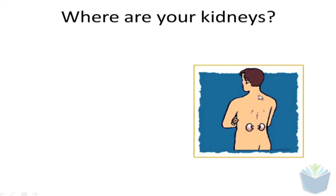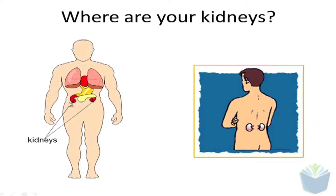If you're wondering where your kidneys are, if you were to place both your hands on your hips, the location of where your fingers are should be roughly where your kidneys are found. Now most people are actually born with two kidneys, but you can survive with just one. Those who have only one kidney need to have dialysis.